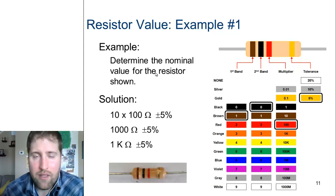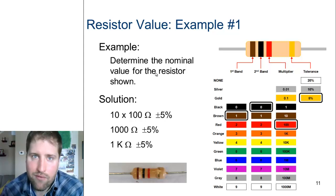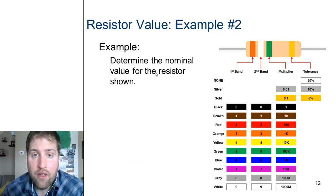Now that fourth band, the gold - that gold is saying what is our tolerance, or it's basically giving us a little bit of wiggle room. In this case it's giving us a 5% wiggle room with our resistor. So mathematically we look at it, we say 10 times 100 with a plus or minus 5% tolerance, which means this resistor is a 1 kilohm resistor plus or minus 5%.